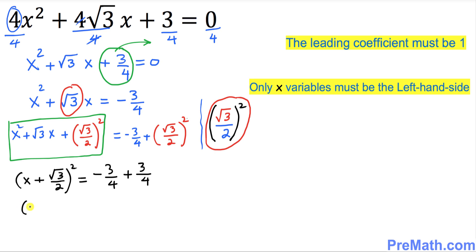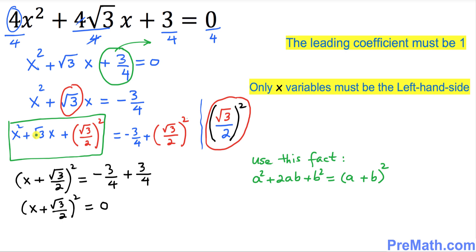So the left hand side is a complete square: x plus square root of 3 divided by 2, all squared, equals 0. If you're wondering how we got here, we used the identity a squared plus 2ab plus b squared equals (a plus b) squared. Here, x corresponds to a and square root of 3 over 2 corresponds to b.